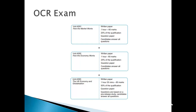Unit 2 covers the UK economy and globalization, which is international relationships with other countries in terms of firms operating in one country and how exports and imports work, and how they meet government objectives. For Unit 3, you will need to have knowledge of Unit 1 and Unit 2. I will be doing Unit 1 first, then Unit 2, then Unit 3 — so it's a logical order and you understand things coherently.